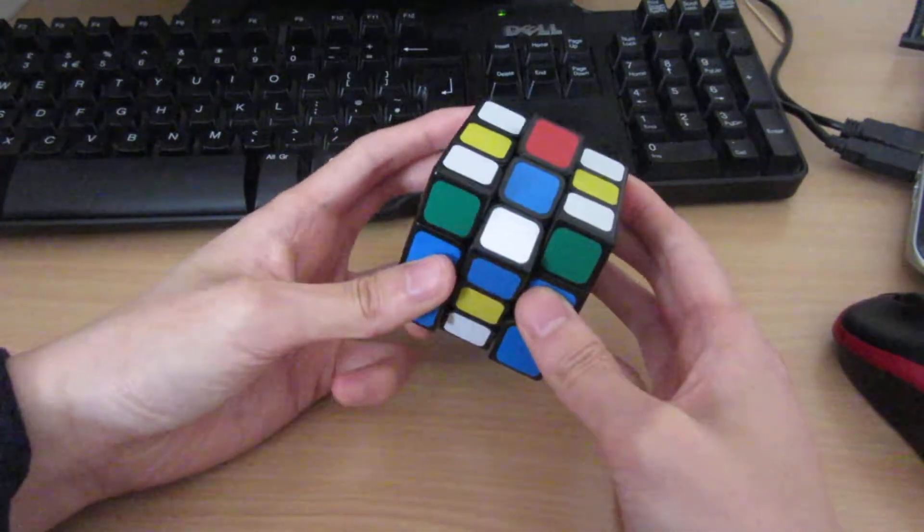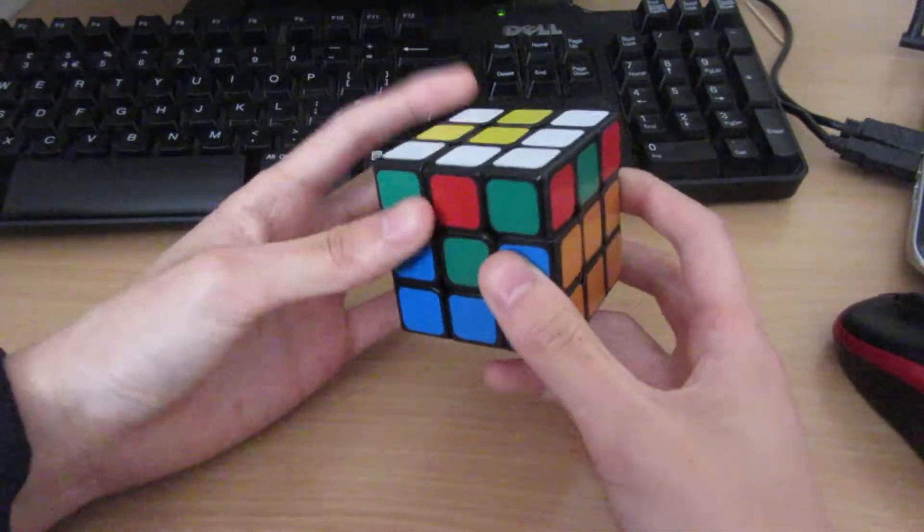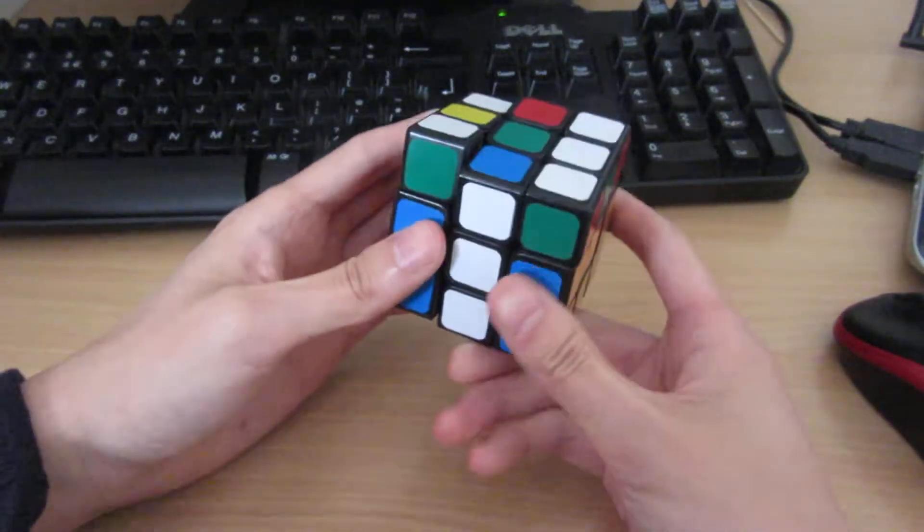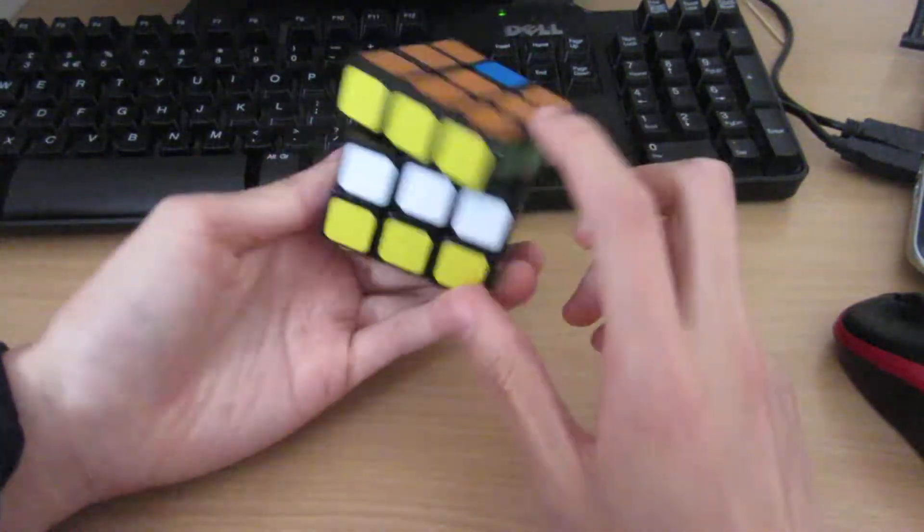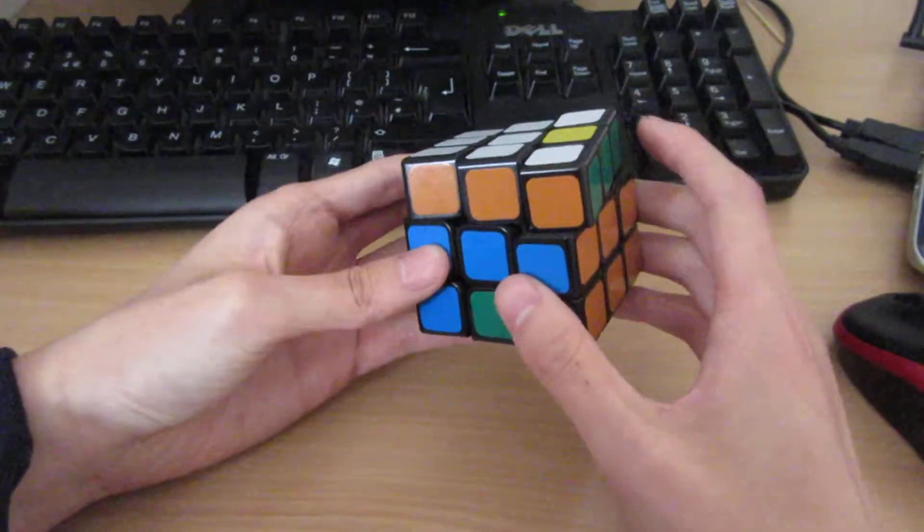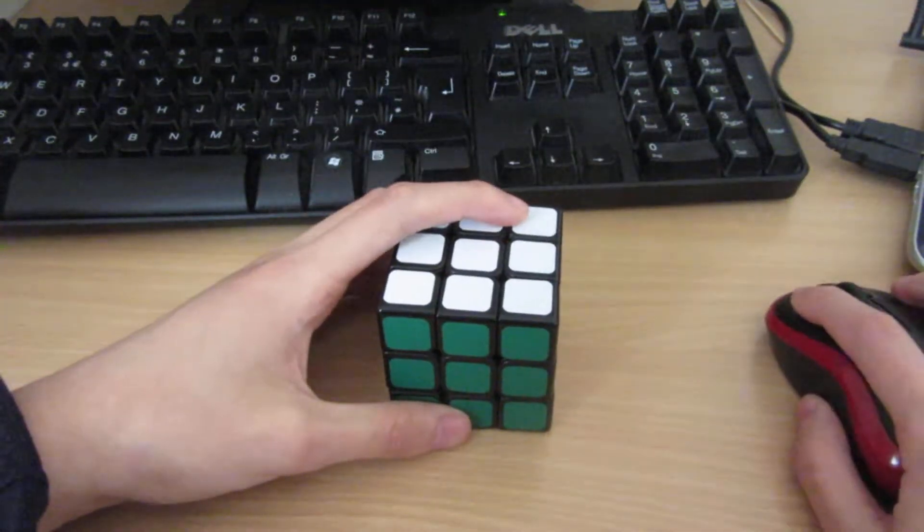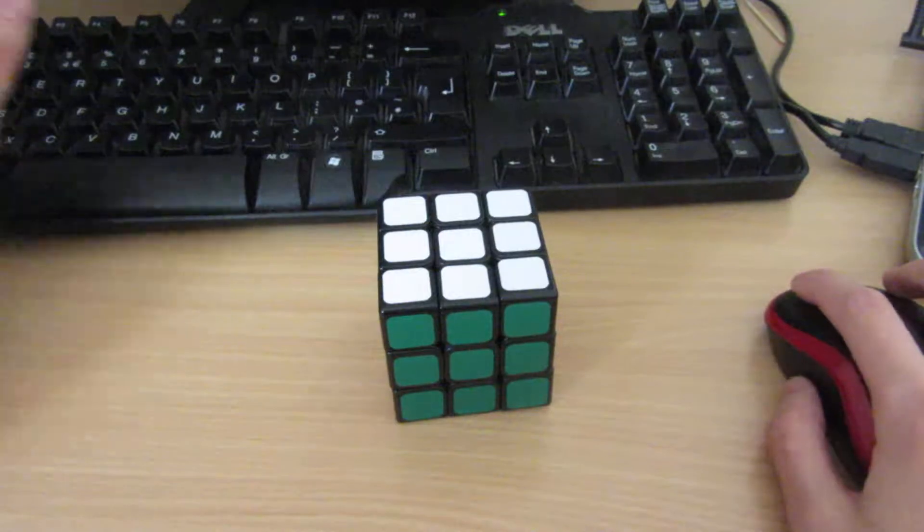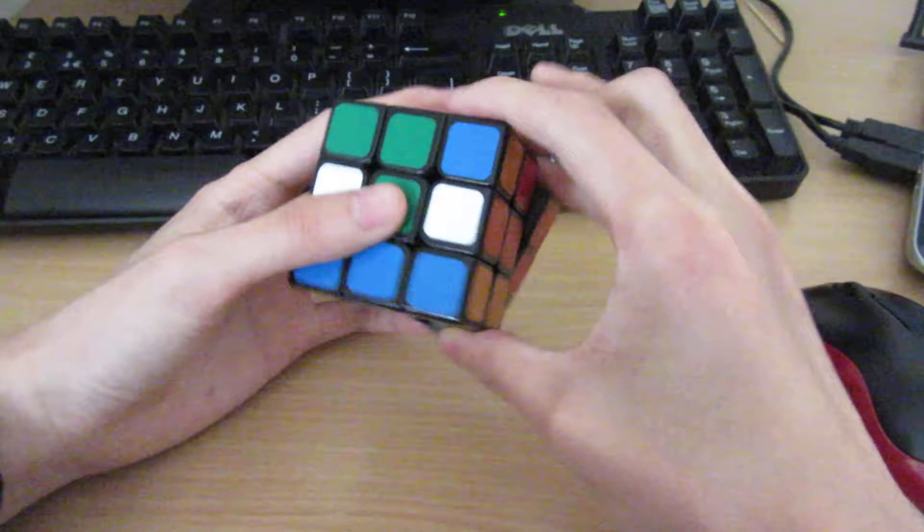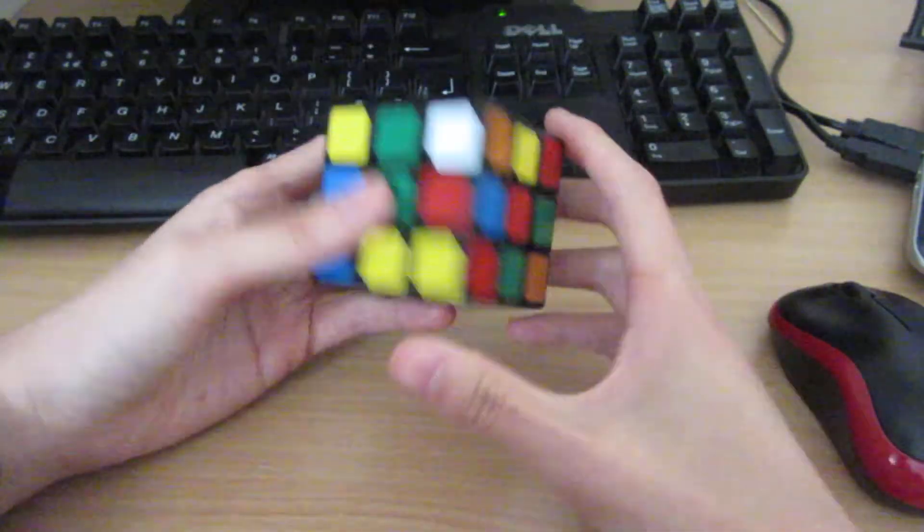Now I do the CMLL and this EO case goes like this. I saw the orange, yeah orange white edge was there, so I just insert this one on the bottom so I get the line, insert into its position like that, and the last four of this case go like that.